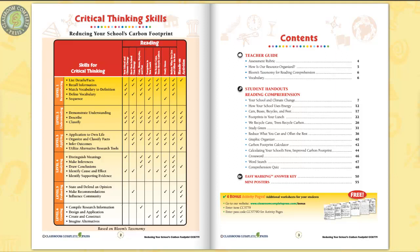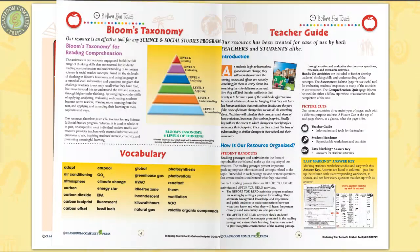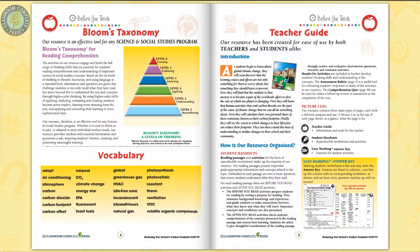Aligned to STEAM and Next Generation Science Standards, this resource is 60 pages of content within 7 chapters full of vocabulary, comprehension, and hands-on activities. We also include an assessment rubric, a critical thinking skills rubric, and a vocabulary list.